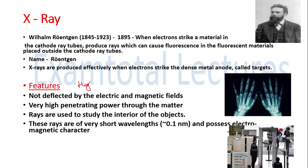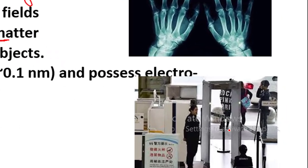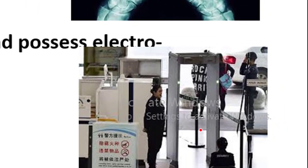The features of X-rays: they are not deflected by electric or magnetic fields. They are high energy electromagnetic radiation with very high penetrating power through matter. That is why they are used in medical science — to see bone structure, detect fractures, arthritis in joints, kidney stones. In physics, they are used to see the interior of objects, and for security measures X-rays are used at checkpoints.